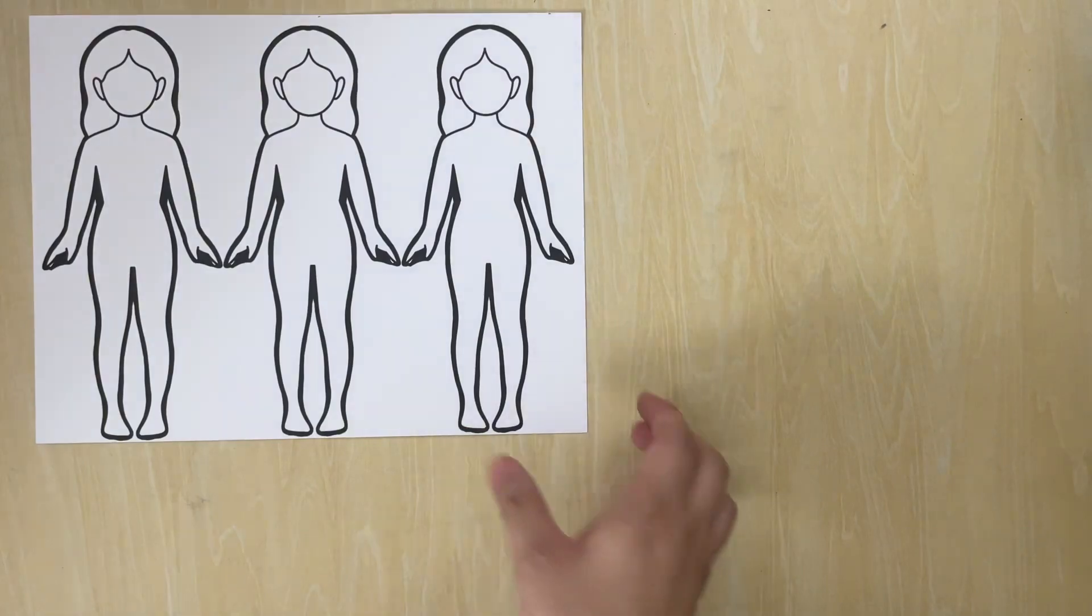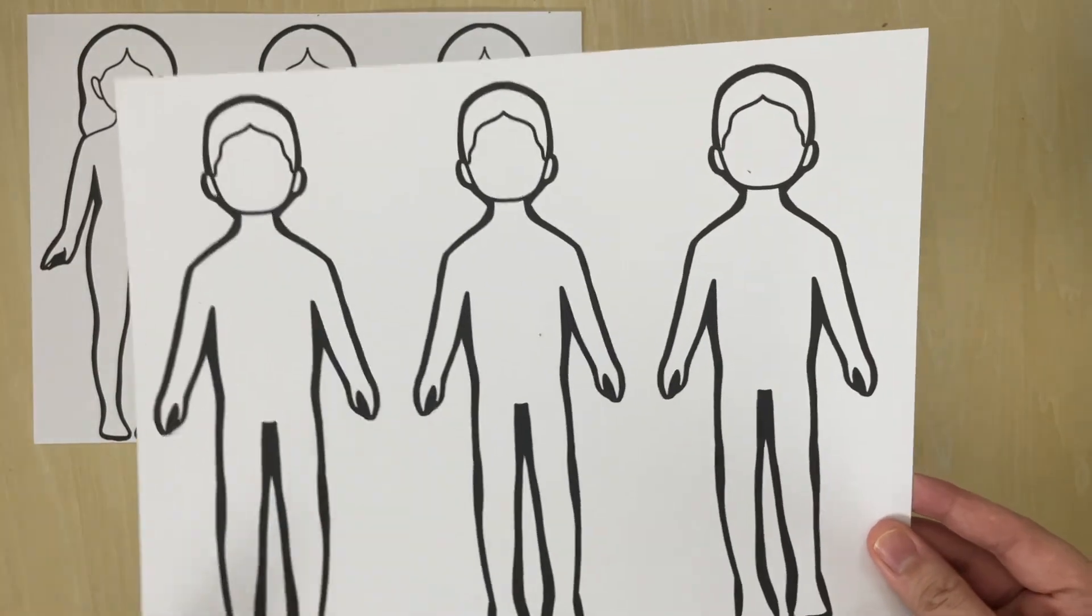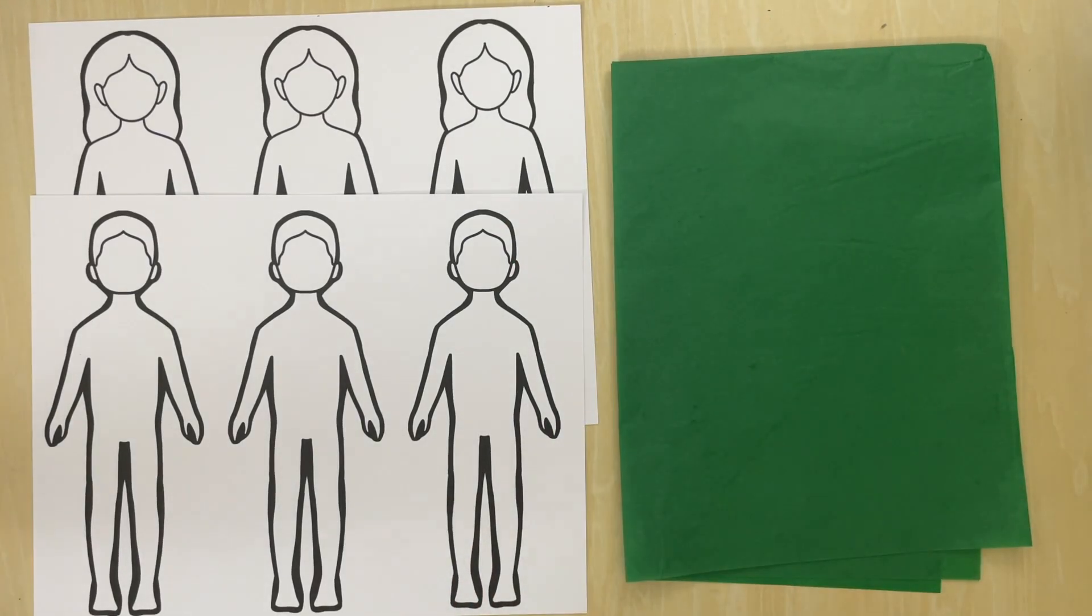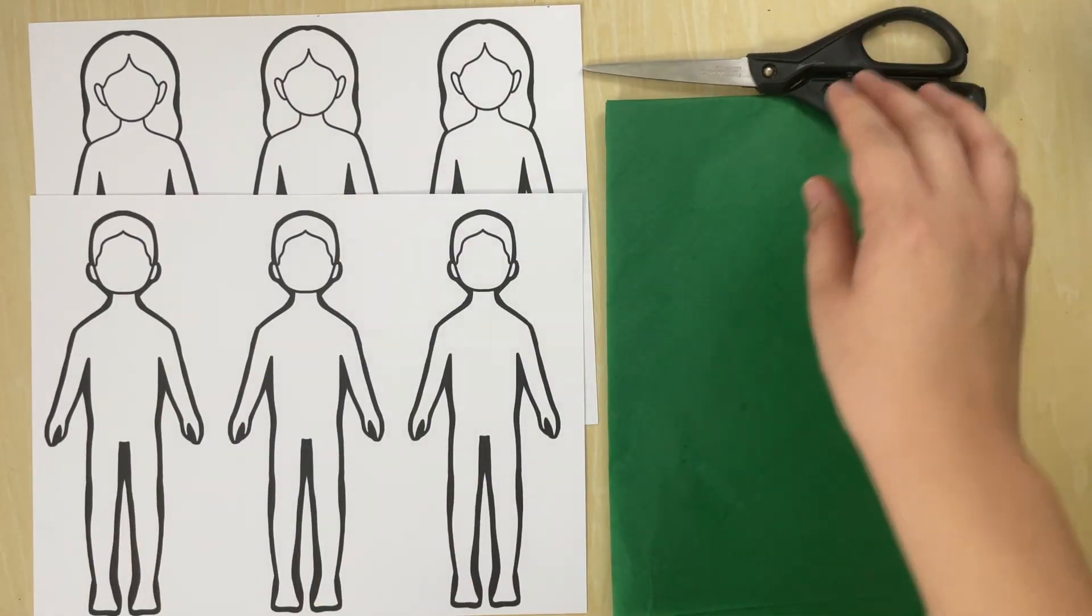First, we will need our template of Eve and Adam printed on board paper. So these are like paper dolls. We'll also need some Japanese paper green, and a pair of scissors.